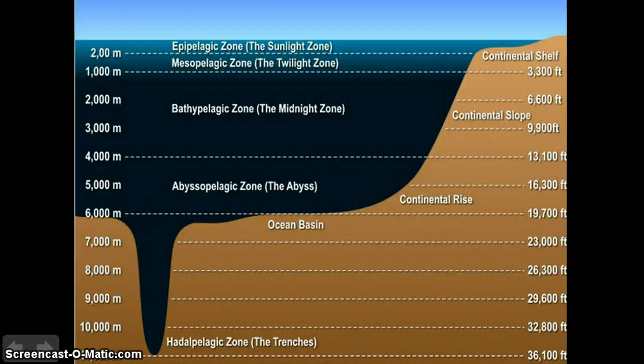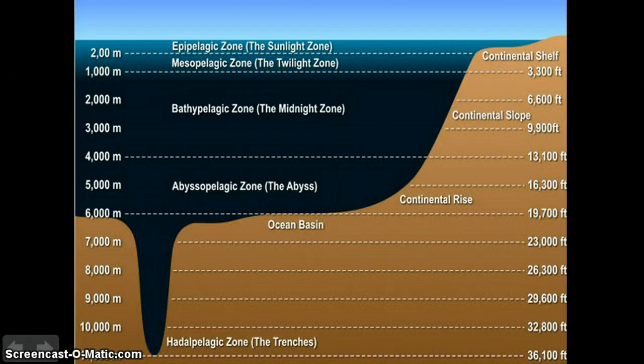The ocean — salt water — is split up into two different environments: the open water, also known as the pelagic zone, and the bottom of the ocean, which is known as the benthic zone.